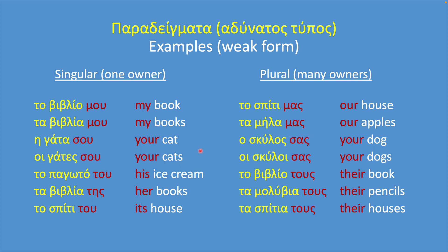Notice that the weak possessive pronoun is placed after the noun, while in English it's always placed before the noun.